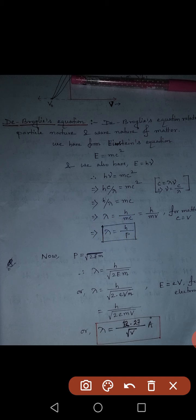We can modify de Broglie's equation in different ways. One way uses the formula from class 11: p = √(2Em), where p is momentum, E is kinetic energy, and m is mass. Substituting this in place of p, the equation becomes λ = h/√(2Em), where E is kinetic energy.